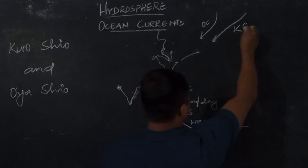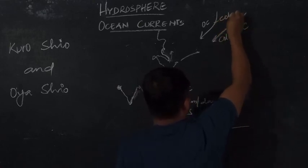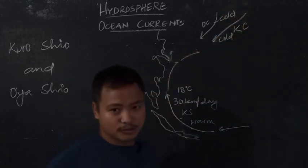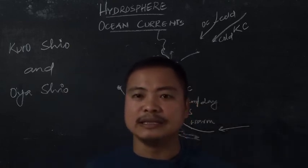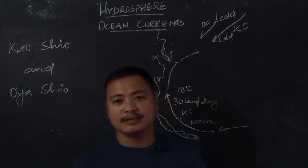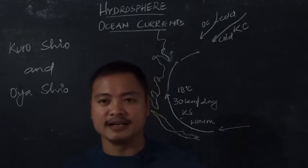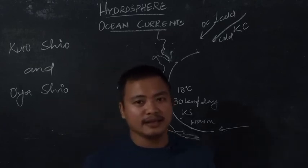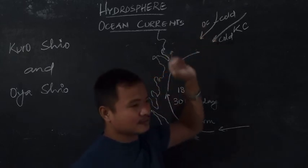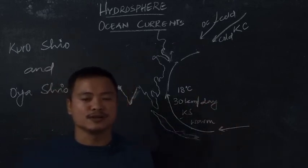The Kuril current is a cold current, just as the Oyashio current is also a cold current coming from the Arctic regions. When the cold Oyashio and Kuril currents meet the warm waters of the Kuroshio current, this zone becomes an excellent fishing ground, as it facilitates the growth of planktons. Because of the conditions prevailing where the waters of the Kuroshio and Oyashio currents meet, it becomes one of the best fishing zones in the world.